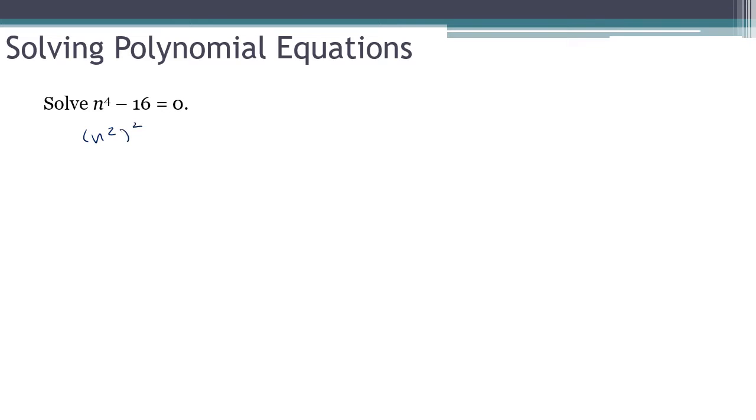And you remember how difference of two squares factors. This is n squared plus 4 times n squared minus 4 equals 0.